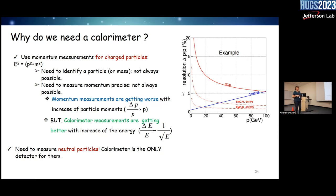Switching to calorimeters. For some regions, tracking alone provides better resolution than calorimeters, but we cannot measure neutral particles with tracking alone — calorimetry is the only way to get energy from neutrals. There are two types: sampling calorimeters and homogeneous calorimeters. At the EIC, we plan homogeneous lead-tungstate crystals in the electron endcap — one of the best energy resolutions in the world.